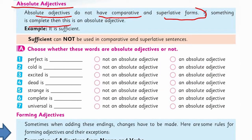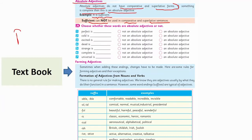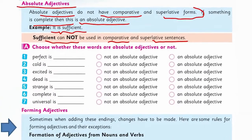Absolute adjectives do not have comparative and superlative forms. If something is complete, then this is an absolute adjective. For example, 'sufficient' — it cannot be used in comparative and superlative sentences. Similarly, 'perfect' does not have a comparative and superlative degree. The word 'dead' also cannot be extended to comparative and superlative degree.